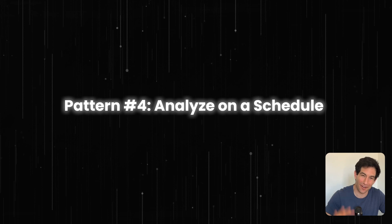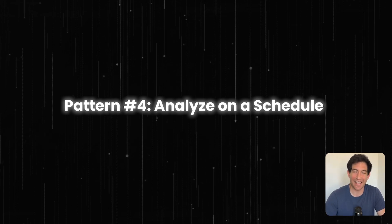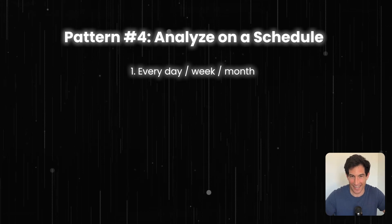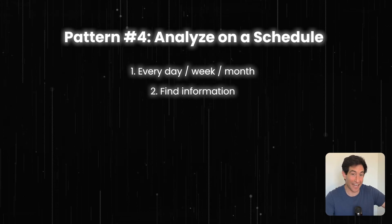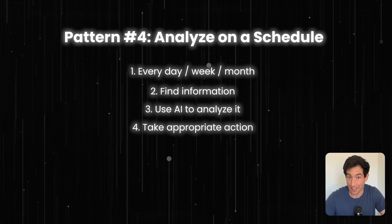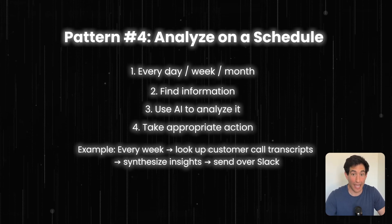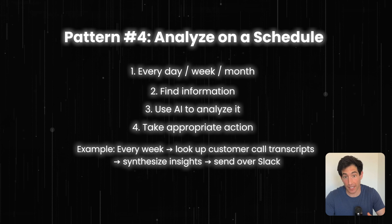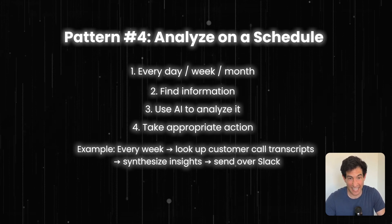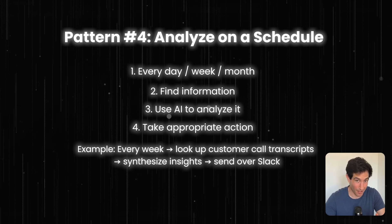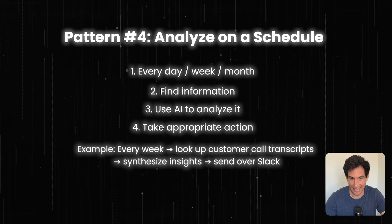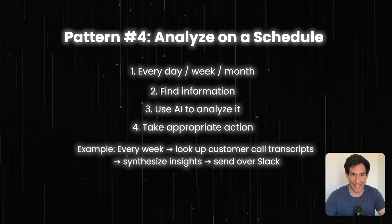And finally, pattern number four is recurring analysis. Every day, week, month, or whatever recurring cadence you want, you ask your AI to go out and find some information, analyze it, and then give you an appropriate analysis or summary. For example, every week, look at the meeting recordings of all the calls we've had with customers, analyze them to pull out key insights like what they like about our product, what they don't like, which competitors they mention, and then send us a detailed insights report at the end of the week.